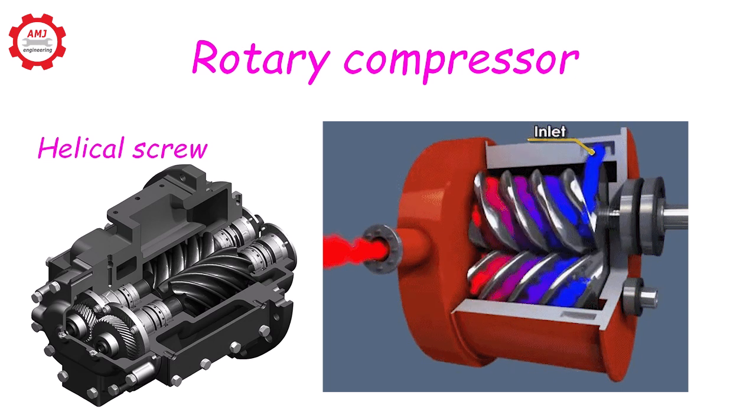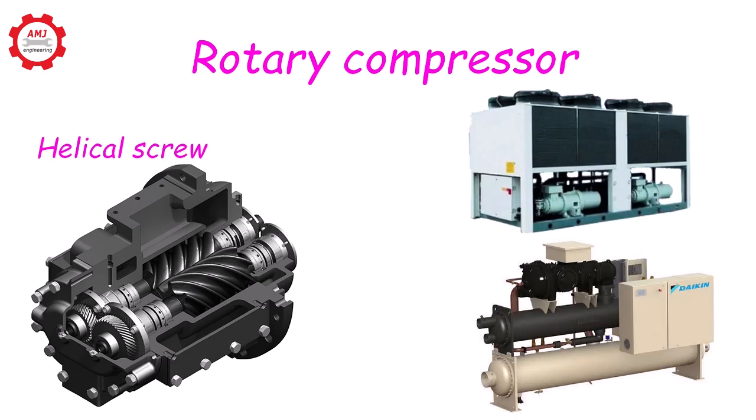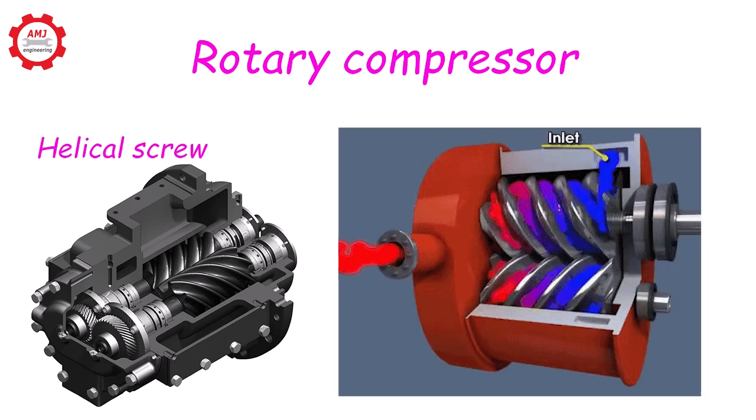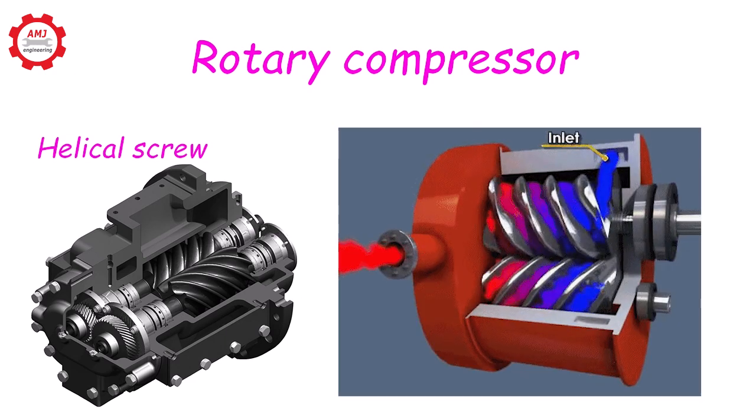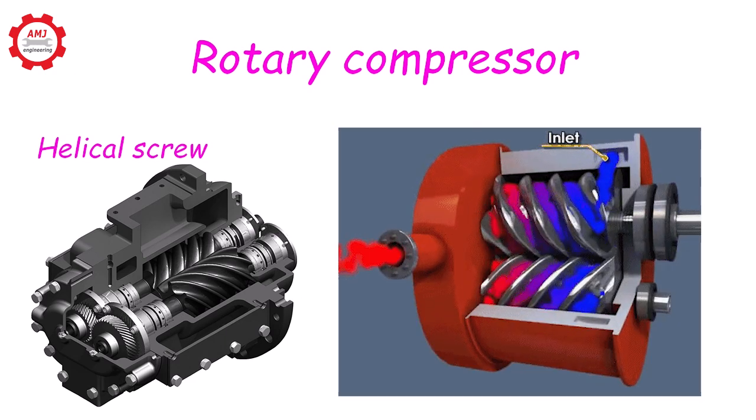The helical screw is the more common type; they are used on both air and water-cooled chillers. These chillers are typically available in 70 to 400 tons of refrigeration. Screw compressors work by using two interlocking rotating helical rotors to compress the refrigerant.